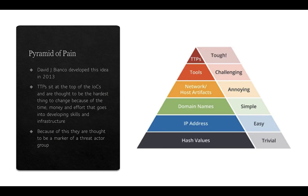This is the pyramid of pain, first proposed in 2013 by David Bianco. At the bottom you have hash values of files, which are trivial to change — you can change one byte in a file and it will change the hash. IP addresses are relatively easy. Domain names that attackers might have registered are simple. Changing network infrastructure is harder and more annoying, but changing tools and TTPs becomes very difficult, partly because of the investment in time and money to develop or acquire those tools and develop the skills and procedures to actually use them.